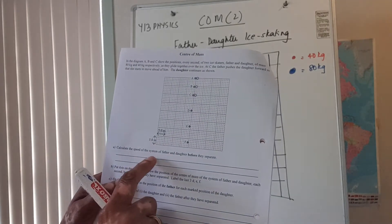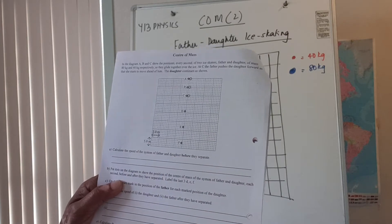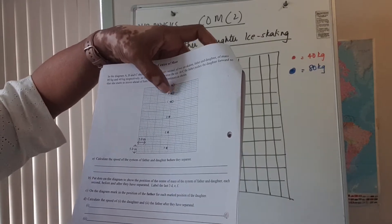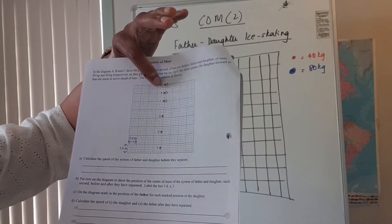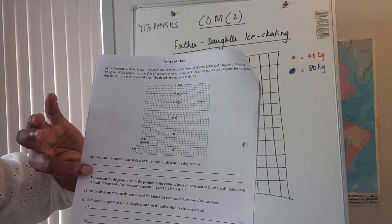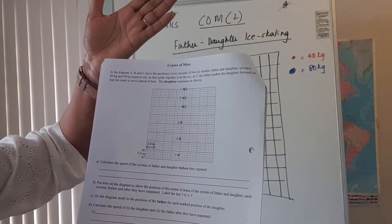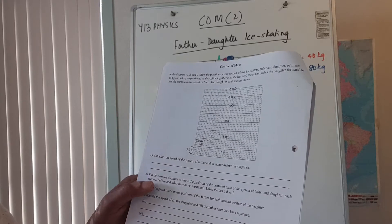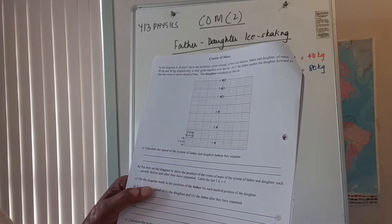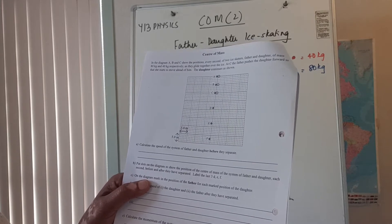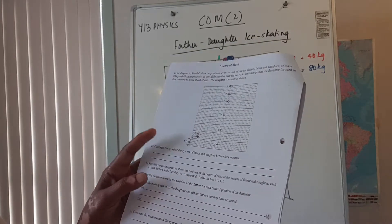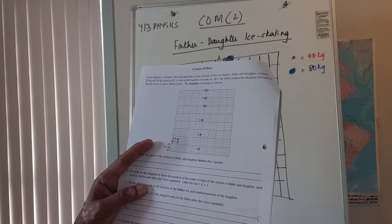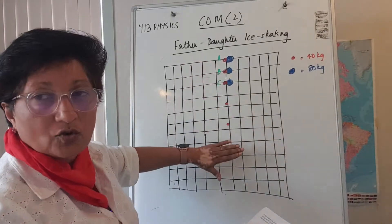The first thing we have to do is calculate the speed of the system of the father and daughter before they separate. Looking at the diagram, the grid is five meters by five meters, so every second the father and daughter are moving five meters, giving a speed of five meters per second. The distance moved in one second is the speed, so the distance moved is five meters in one second. Then it says to put dots on the diagram to show the positions of the center of mass of the system each second before and after they have separated.